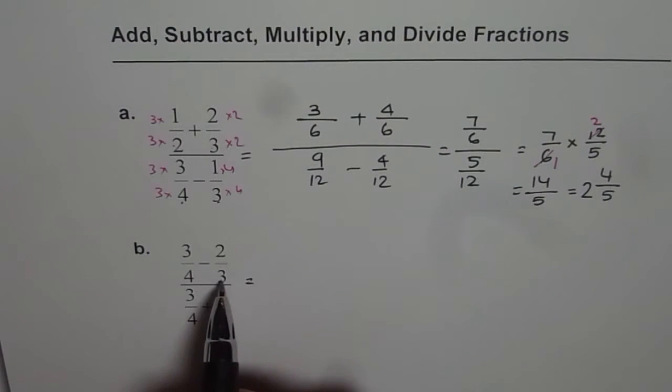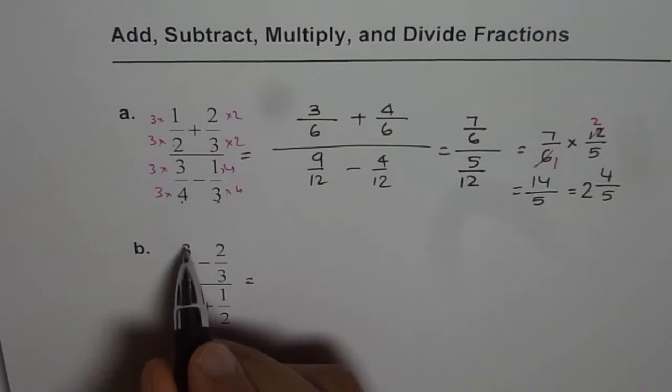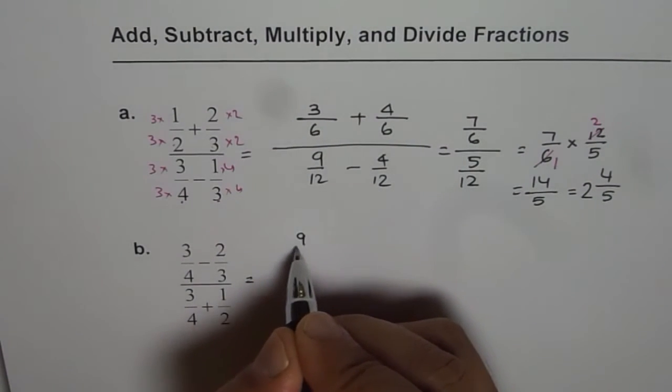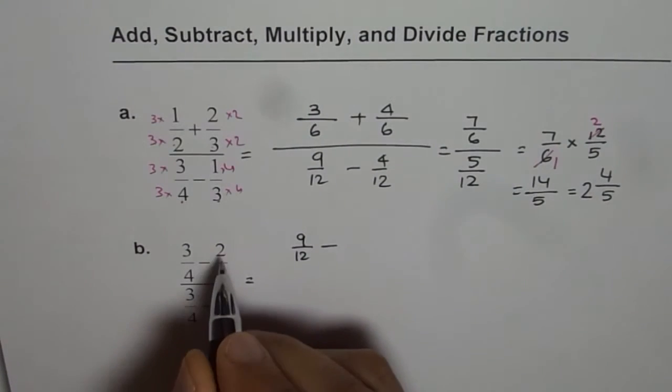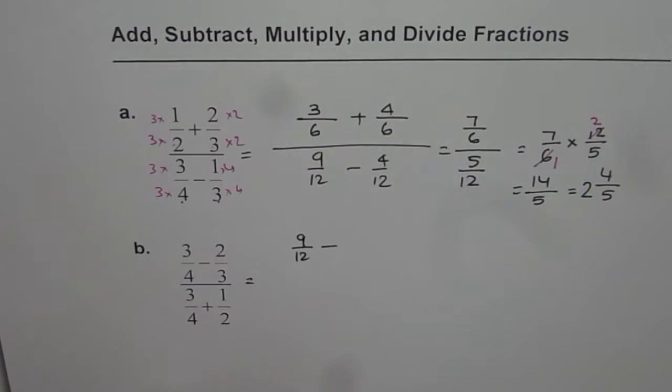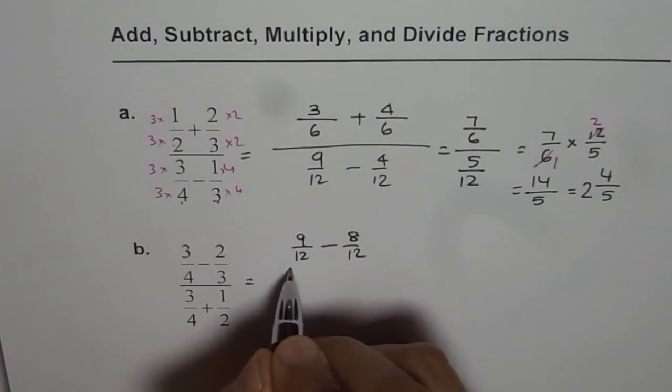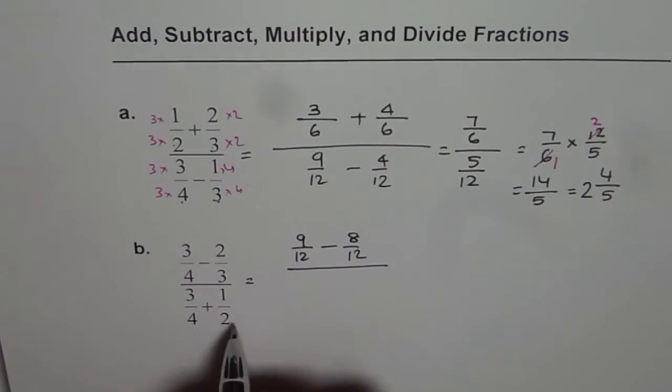4 and 3, common denominator should be 12. So we will multiply the first term by 3. We get 9 over 12 take away. Second term should be multiplied by 4. 8 over 12.